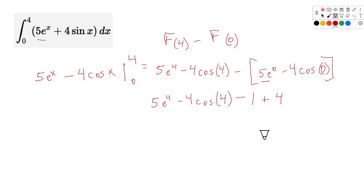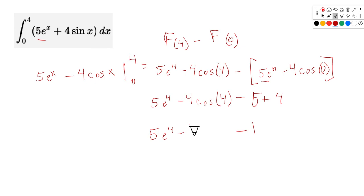So the final answer is 5e⁴ minus 4 cos 4 minus 1. If they want the decimal we can plug that in the calculator, or if they want the exact value just put that expression in. It really just goes back to getting the antiderivative — the only new thing is we plug in those boundary endpoints, which gives us the area under the derivative curve.